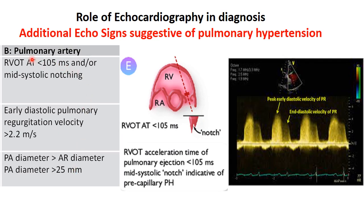The second category relates to the pulmonary artery: acceleration time obtained from the RVOT below 105 ms and/or mid-systolic notching is considered a suggestive sign; early diastolic pulmonary regurgitation velocity more than 2.2 m/s; and dilated pulmonary artery more than 2.5 cm.